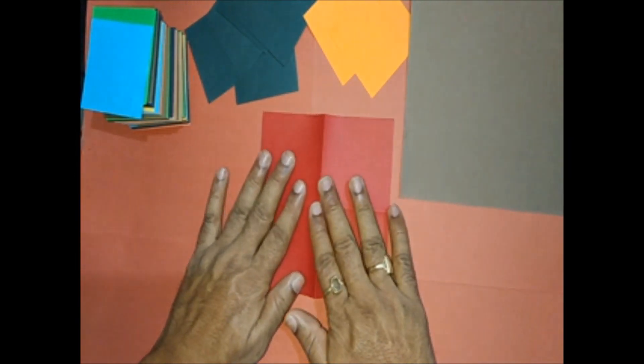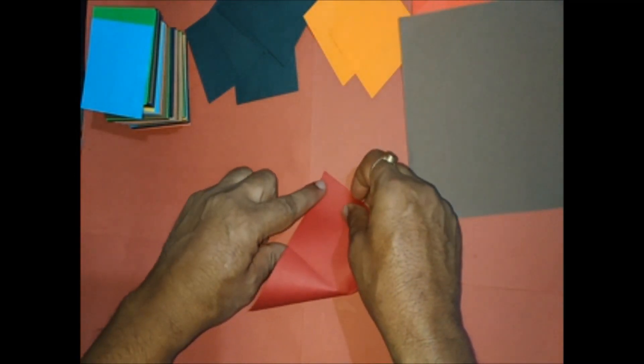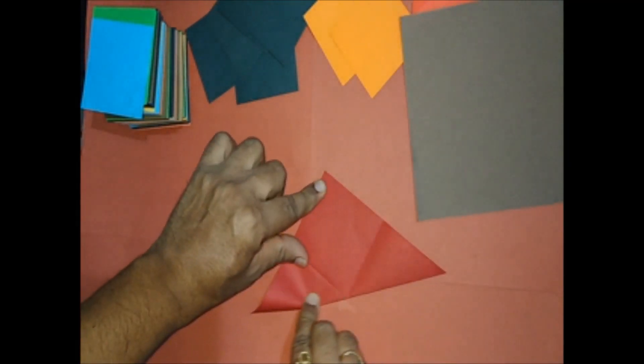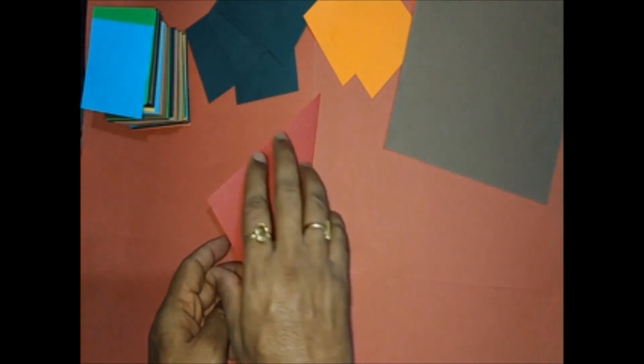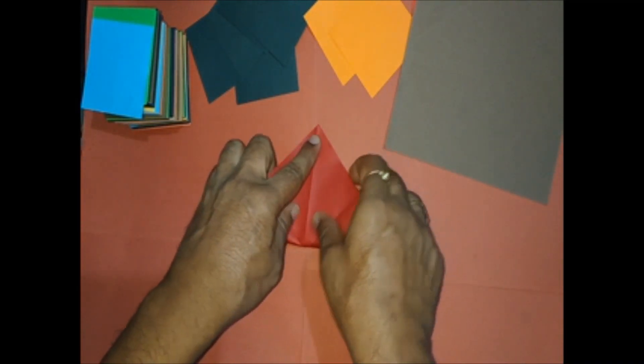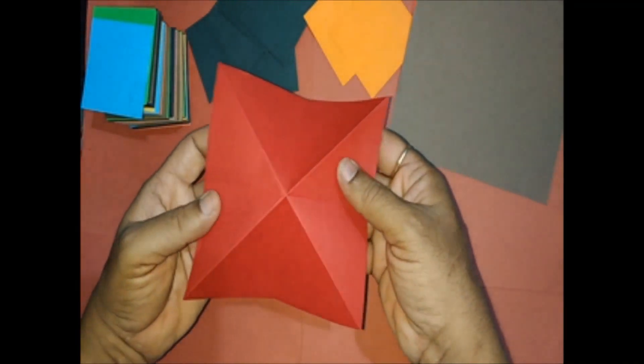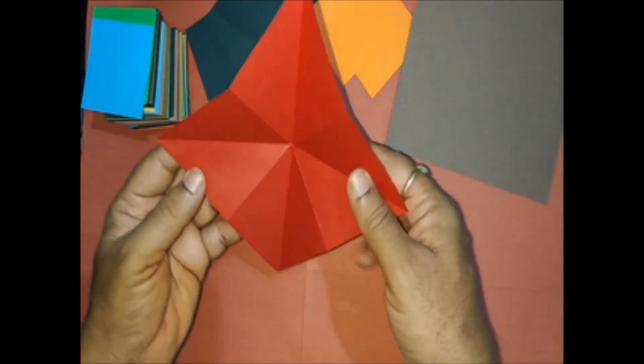On the reverse side make a diagonal fold. Make one more diagonal fold. Our triangular basic fold is ready.